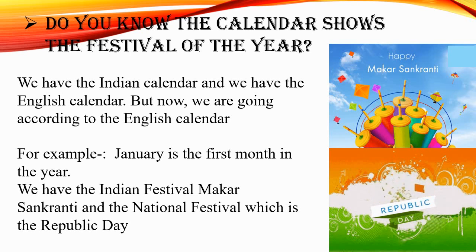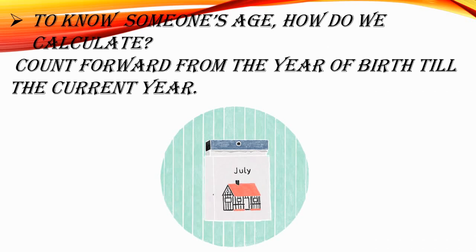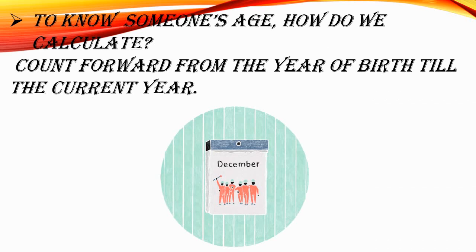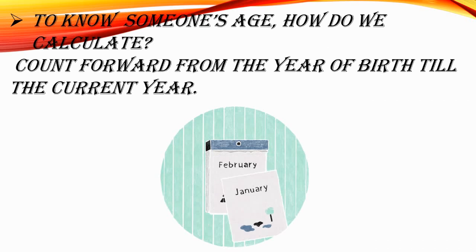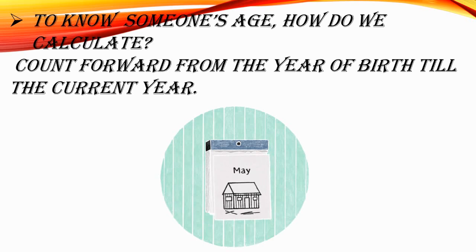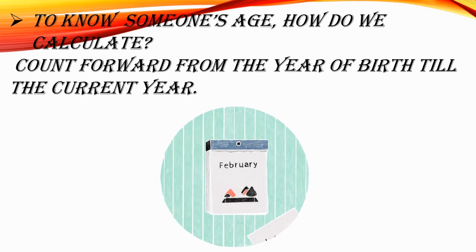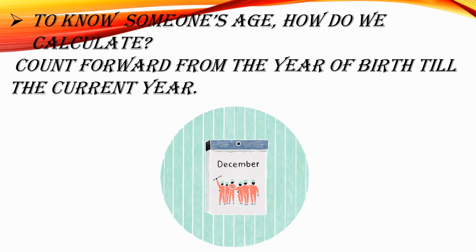To know someone's age, how do we calculate? Count forward from the year of birth till the current year. Students, to know someone's age, we have to count forward from the year of birth till the current year.